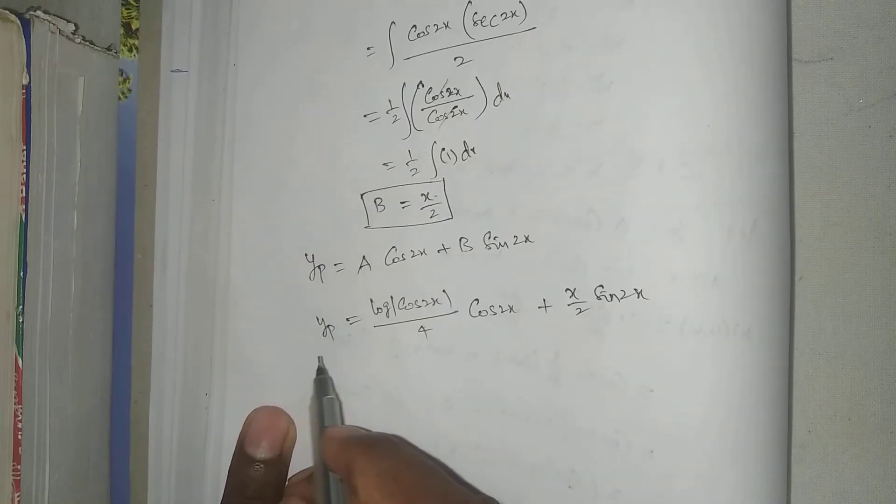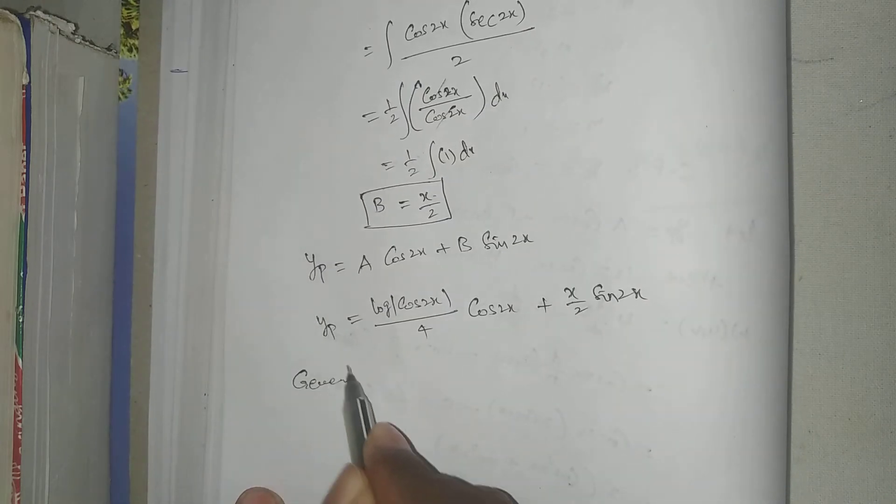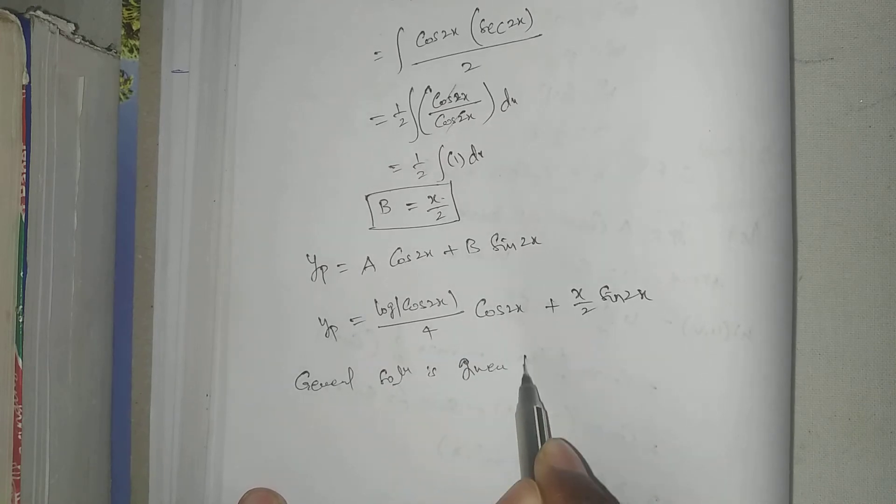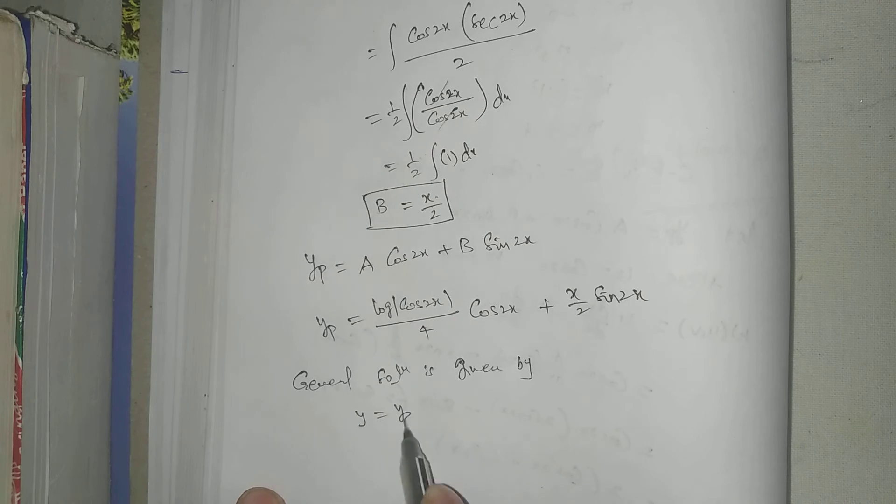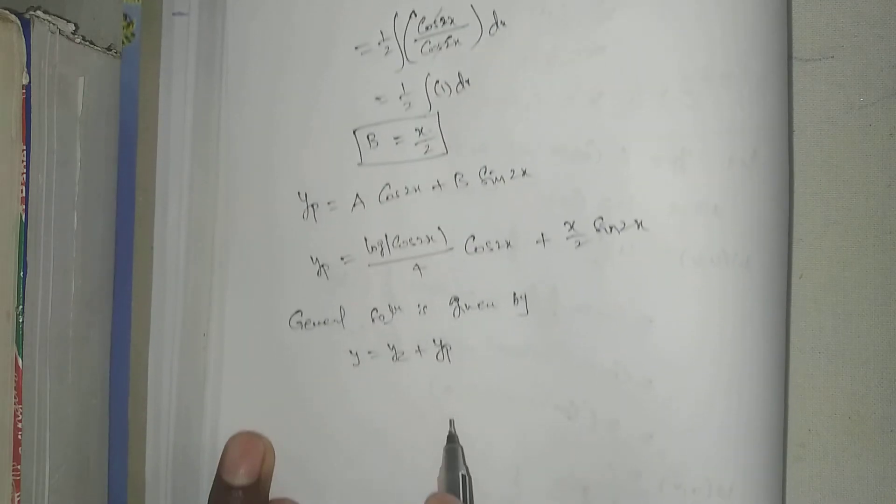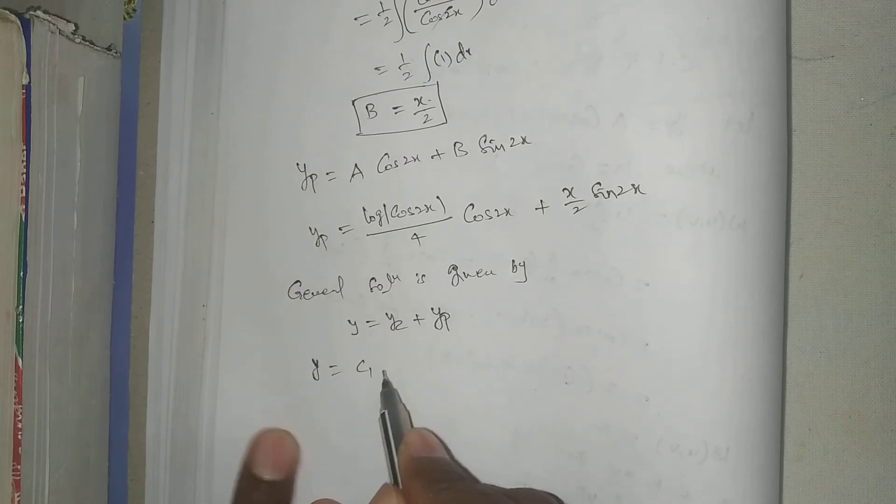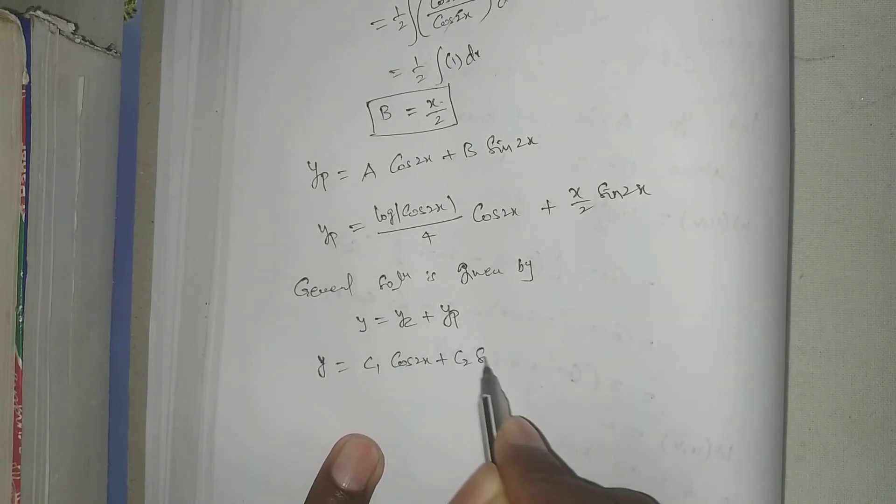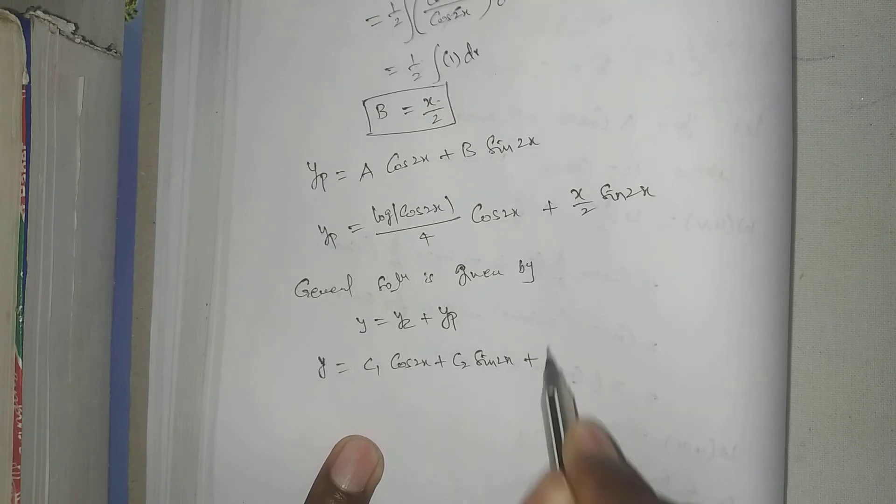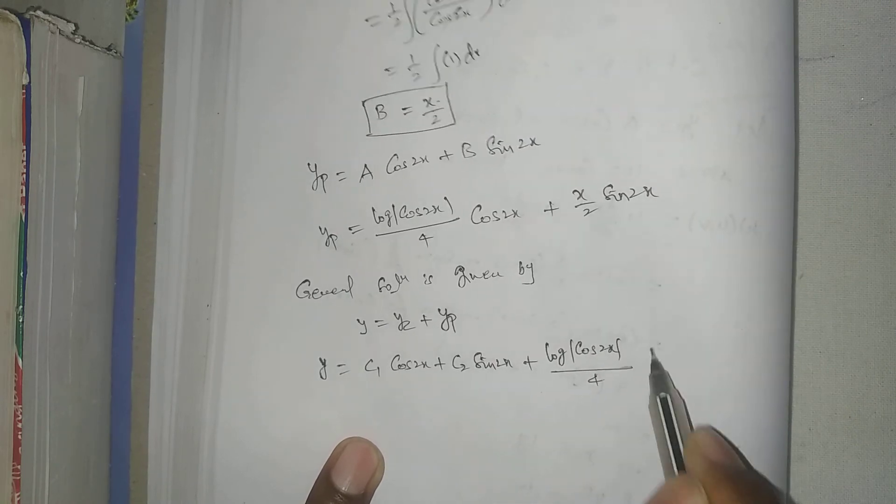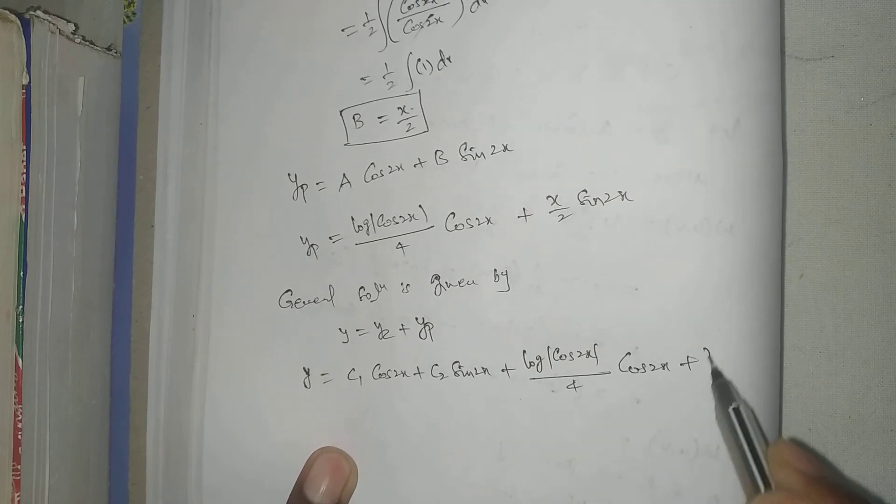General solution is given by y equal to yc plus yp. Y equal to c1 cos 2x plus c2 sin 2x plus log mod cos 2x by 4 cos 2x plus x by 2 sin 2x.